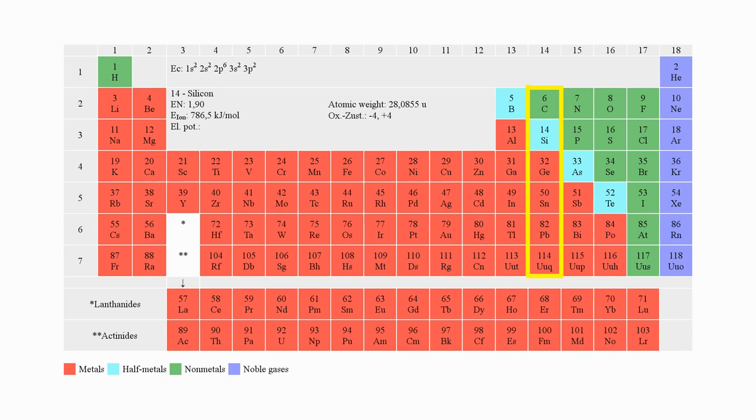The chemical element silicon is placed at the 14th group of the periodic system along with carbon, germanium, tin, lead, and the radioactive element ununquadium.